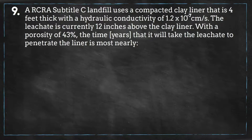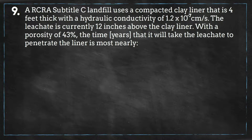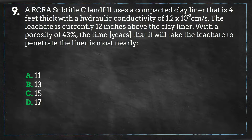A RCRA Subtitle C Landfill uses a compacted clay liner that is 4 feet thick with a hydraulic conductivity of 1.2 times 10 to the negative 7 centimeters per second. The leachate is currently 12 inches above the clay liner. With a porosity of 43%, the time required for the leachate to penetrate the liner is most nearly: A) 11, B) 13, C) 15, or D) 17.